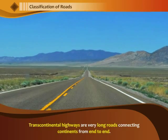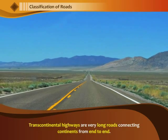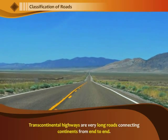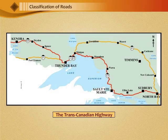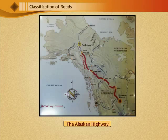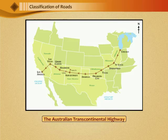Transcontinental highways are very long roads connecting continents from end to end. For example, the Trans-Canadian Highway, the Alaskan Highway, the Pan-American Express Highway, and the Australian Transcontinental Highway.